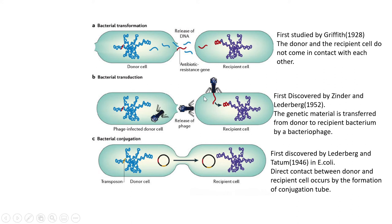The third type of genetic recombination is bacterial conjugation, first discovered by Lederberg and Tatum in 1946 in E. coli. In this process there is direct contact between the donor cell and the recipient cell by the formation of a conjugation tube.